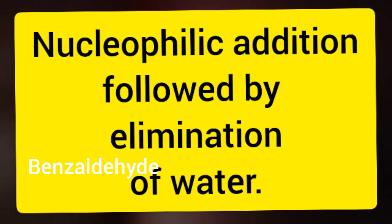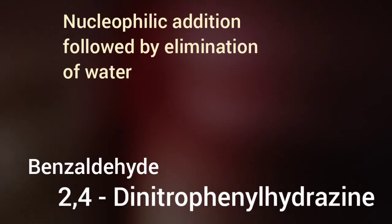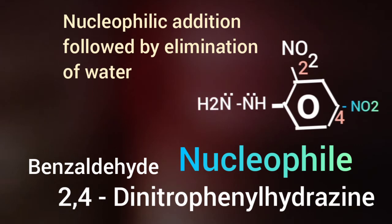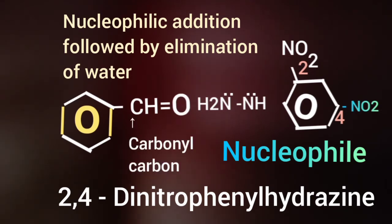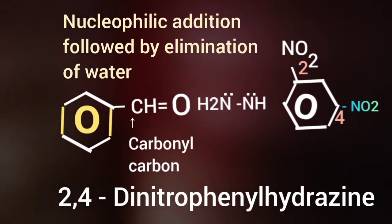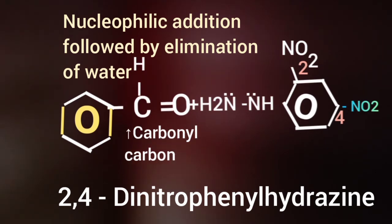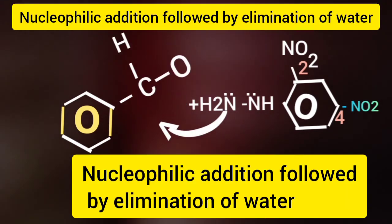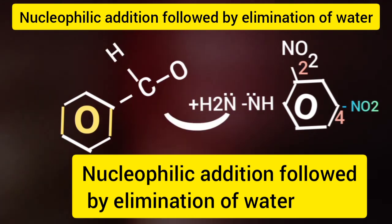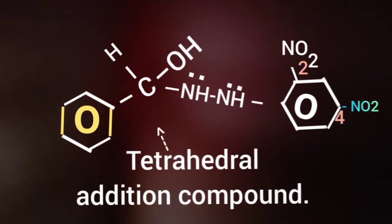The derivative of ammonia, 2,4-dinitrophenylhydrazine, being a nucleophile, can be added with benzaldehyde, which has a carbonyl carbon, at pH 3.5 or in presence of acid. Formation of tetrahedral addition compound is a reversible process. Then, rapid dehydration takes place to give the product, that is 2,4-dinitrophenylhydrazone of benzaldehyde.